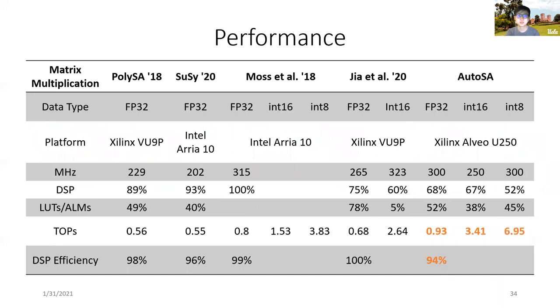The second dimension to evaluate is performance. With the comprehensive coverage of different hardware optimization techniques and the support of tuning, we are able to generate designs with high performance. As an example, this table shows performance of the generated designs for matrix multiplication under different data precisions. We compared it to several previous works that achieved high performance as well.